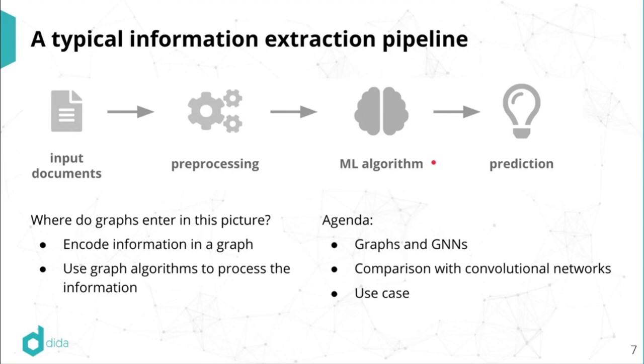So then this is now a quick agenda for the remainder of the talk. So I'm gonna start in this part of the pipeline discussing graphs and graph neural networks. Then as an interlude, I'll make a quick comparison with the convolutional nets, which are like the bread and butter of computer vision. And the hope here is that probably most people have some familiarity of conv nets. And then at the end, I'll go back to our use case. And this is going to illustrate a bit how the preprocessing would look like.